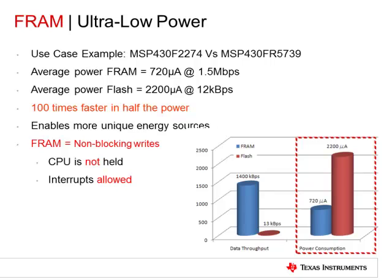A comparison of active power on both devices shows the FRAM device uses less than half the power of the flash device while writing at 100 times the speed. In the case where both devices write at the same speed, the FRAM device is 250 times lower power than the flash device. This is because the active duty cycle of the FRAM device is a small fraction, allowing the device to spend most of its time in standby.